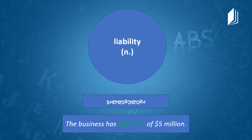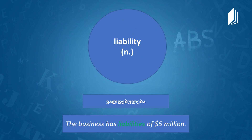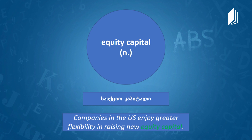The next word is 'liability' — it's a noun. Liability is a responsibility of a person, business, or organization to pay or give up something of value. For example, debt is a liability. Example sentence: 'The business has liabilities of five million dollars.'